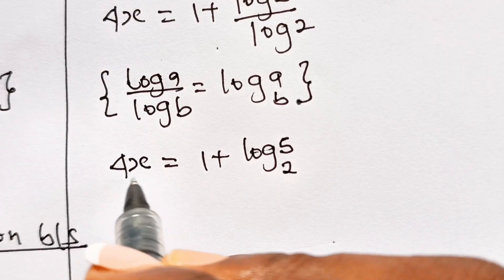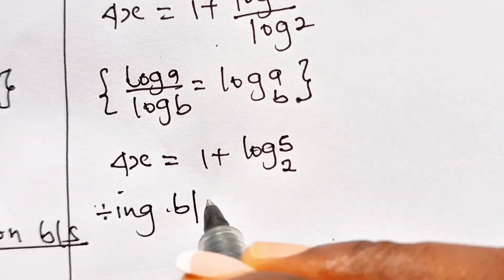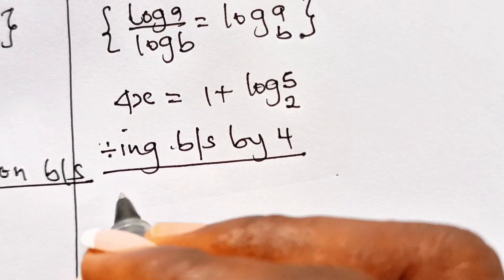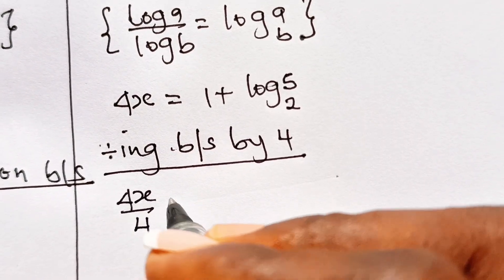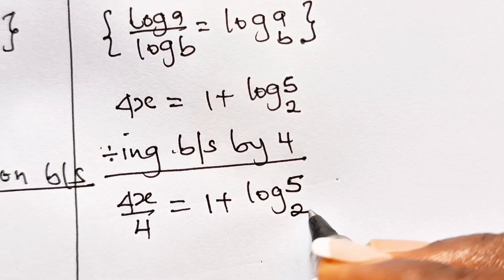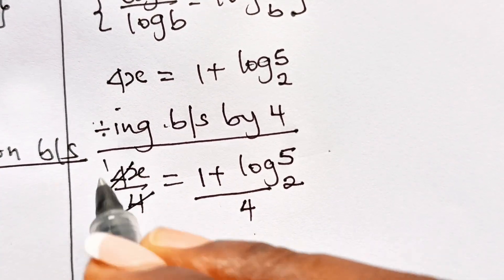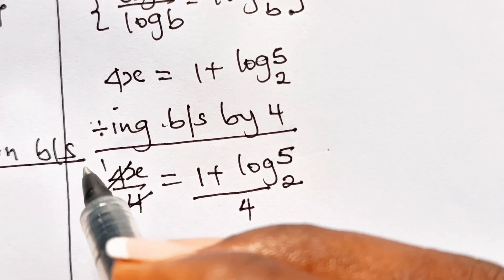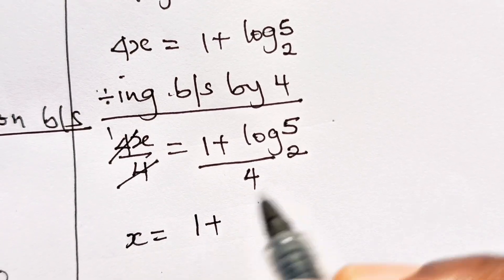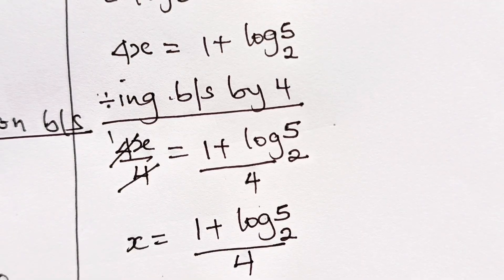Since we are looking for the value of x, let's divide both sides by 4. So we have 4x divided by 4 equal to 1 plus log 5 base 2, divided by 4. The 4s cancel to give x equals 1 plus log 5 base 2, divided by 4.